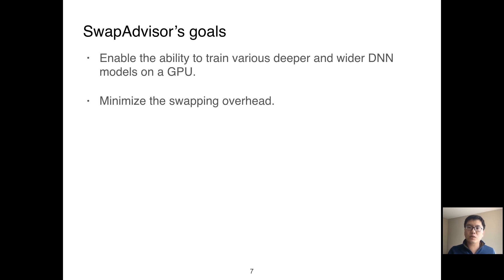The major goal of SwapAdvisor is to support various types of deeper and wider DNN models. Here, deeper means having more layers and wider means having more parameters in a layer. Of course, it is not very useful if swapping incurs significant overhead compared to computation. As a result, SwapAdvisor also needs to minimize the overhead incurred by swapping.